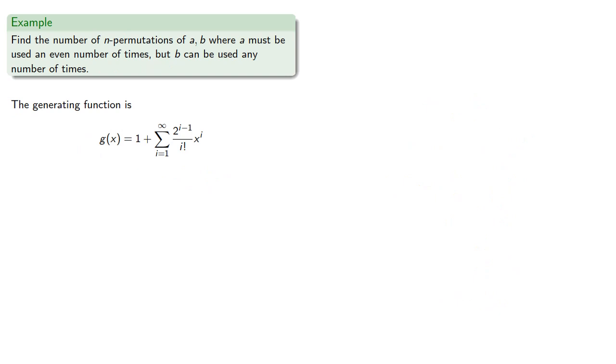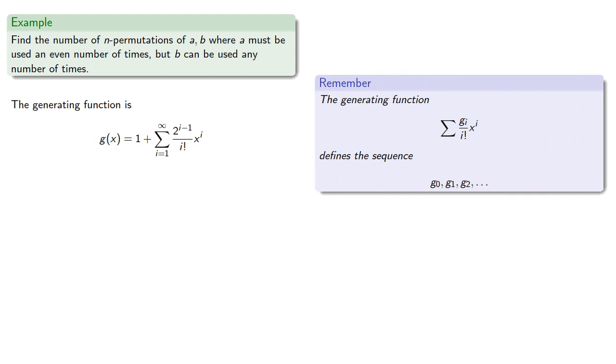So if we want to use our generating functions to find the number of permutations, remember that once we have the generating functions, the actual sequence is the numerator when the denominators are the factorials. So our series actually begins at i equals 1, so we know that this first term 1, that's really 1 divided by 0 factorial, and so that tells us the number of 0 permutations is 1. Meanwhile, for every other term, the number of n permutations is going to be 2 to the power of n minus 1, which is the numerator of our coefficients where the denominator is n factorial.